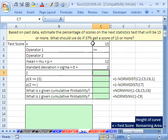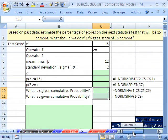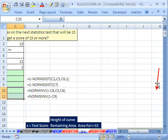What should we do if 37% get a score of 15 or more? Here's our x. Our operator is going to be greater than or equal to, meaning the top part of the chart is what we're interested in. Our mean is still 12, and our standard deviation is still 2.